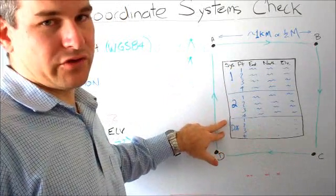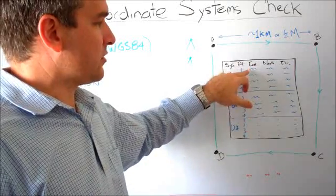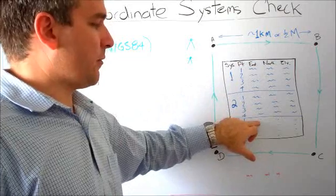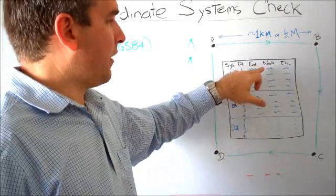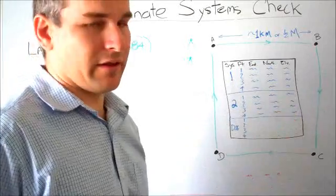Then all you have to do is calculate the difference between these numbers. We want to calculate the difference between eastings for point one and put that number there, and then same with northings, put that number there, and elevation, put that number there.